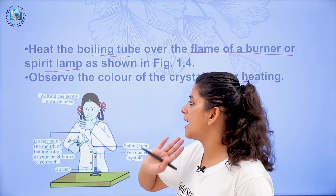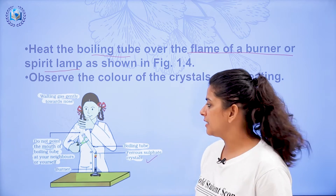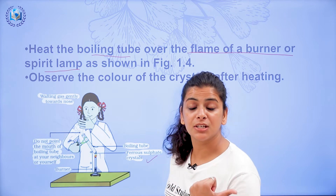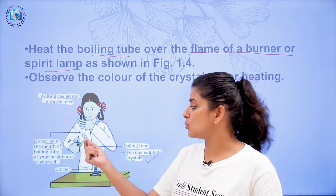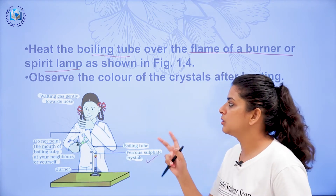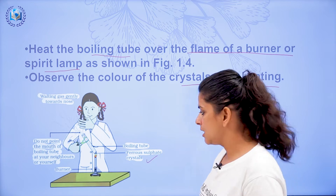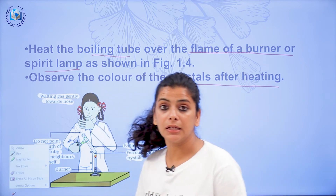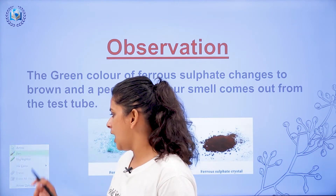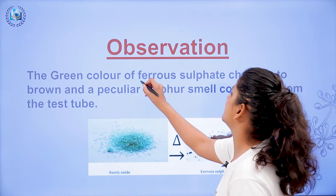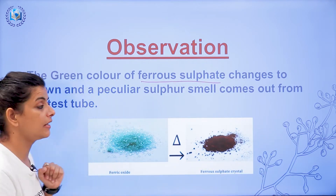Do not point the mouth of the boiling tube at your neighbors or yourself. The mouth of the boiling tube should be kept in a different direction, otherwise the reaction occurring inside can burn your face or the face of someone sitting nearby. After heating, observe the color of the crystals — how does it look? The green color of ferrous sulfate is what you need to observe and remember.